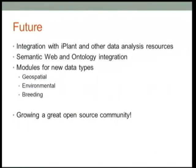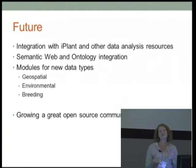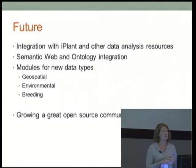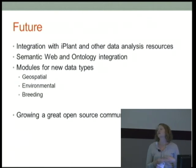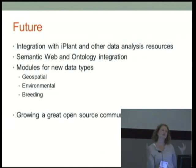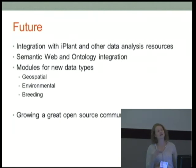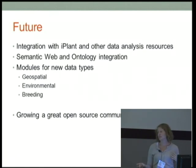We have a lot of grants floating out in the ether that we're hoping will get funded. Integration with iPlant is one of the big things we really want to do — we'd like our users to be able not just to download and look at data but to analyze it and interact with it. A lot more semantic web, ontology integration, and interoperability between all the Tripal databases would be really nice. We are currently developing modules for geospatial data, environmental data, and a big breeders toolbox for plant breeders. Tripal is species agnostic — if you want to go animals, bacteria, or whatever, you could use it. Mostly we just want to grow a really great open-source community.